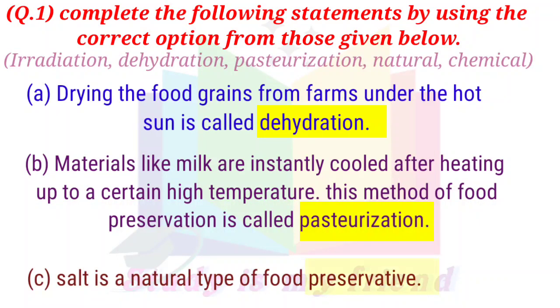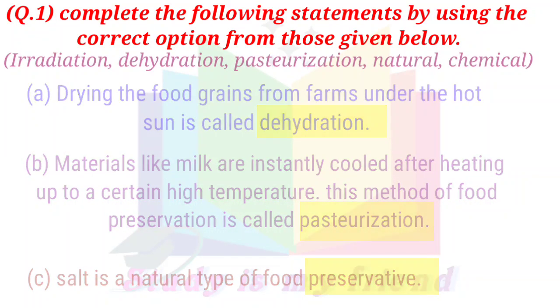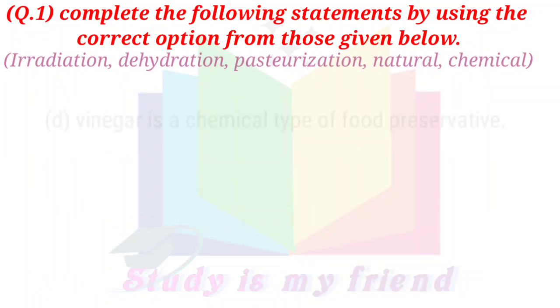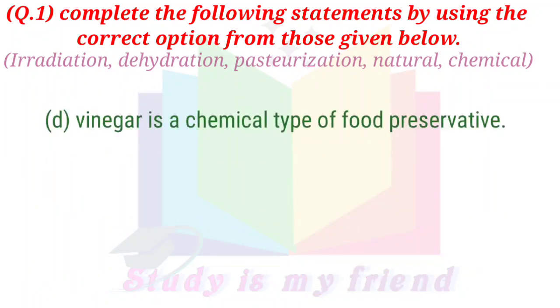c. Salt is a natural type of food preservative. d. Vinegar is a chemical type of food preservative.